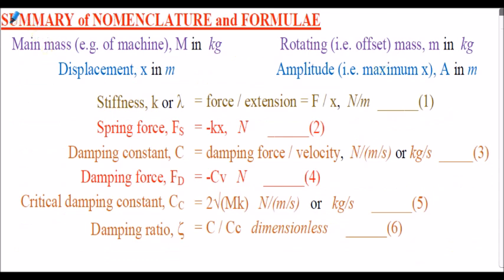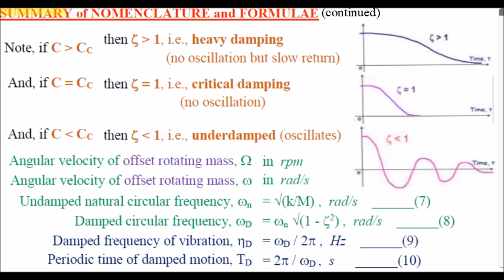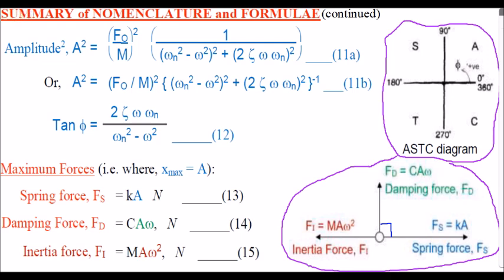Here's our recap of the summary of the nomenclature and the formulae derived. I won't bore you again by outlining what's on the next few slides. If you've seen the previous presentations, you're fully aware of the terminology, nomenclature and formulae we're using. Here's the first slide of the summary showing various formulae derived in the previous presentations. Here's the second summary slide outlining some damping terminology and again some equations derived previously. And here's the third summary slide with formulae to calculate amplitude, phase angle and the forces involved in this analysis. If you need further information on notation and formulae, you can always refer to the previous presentations.